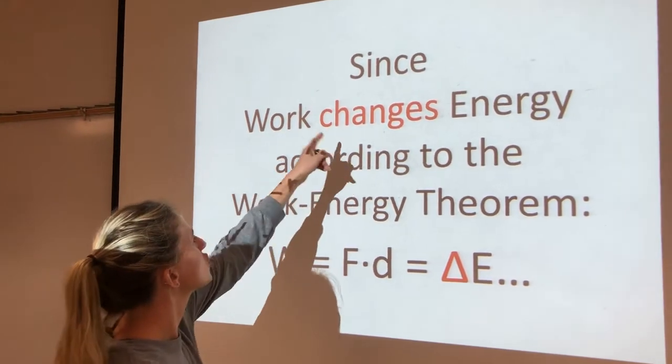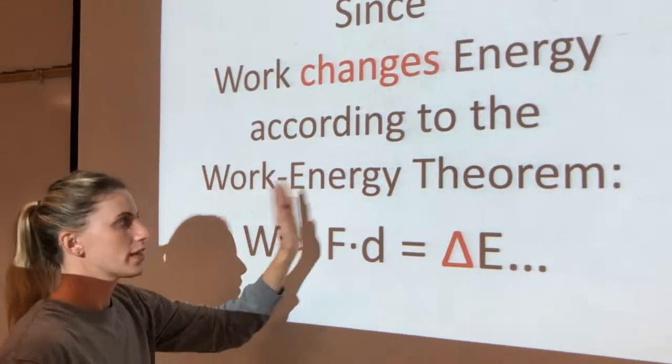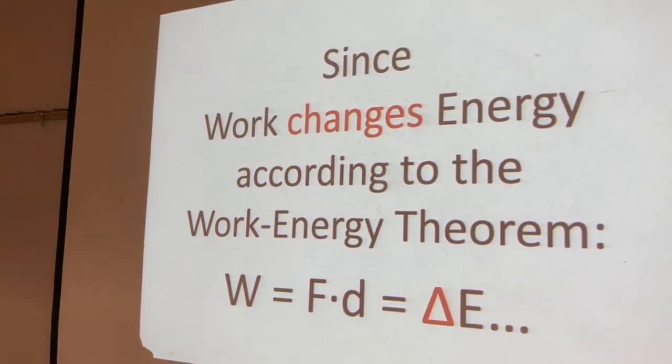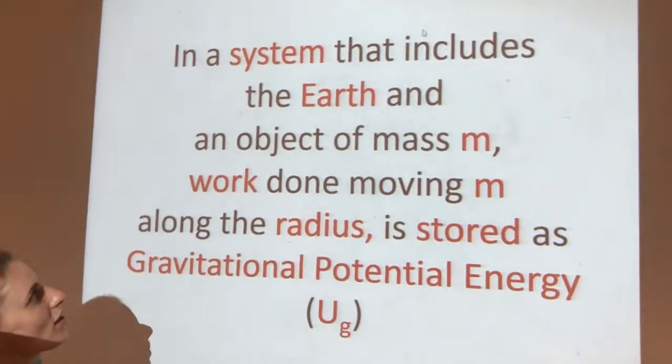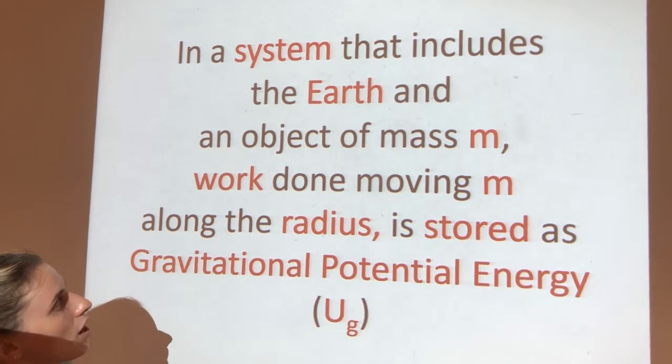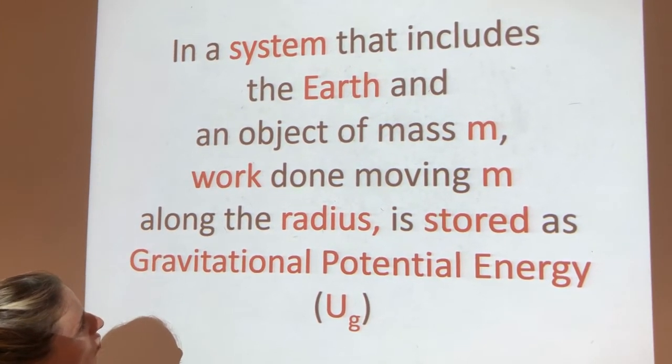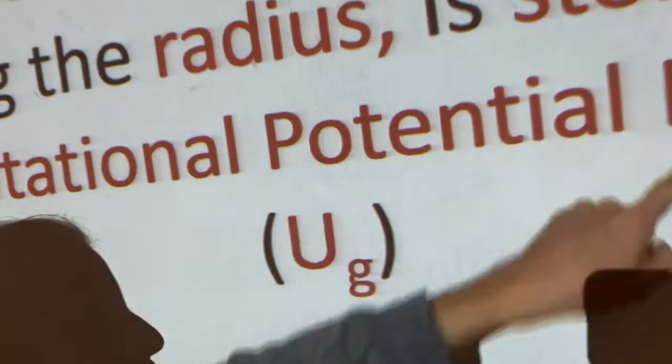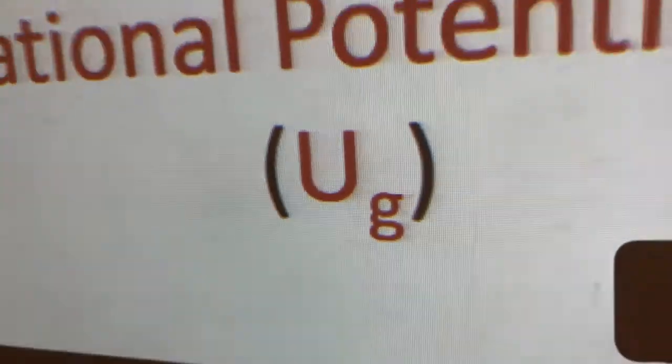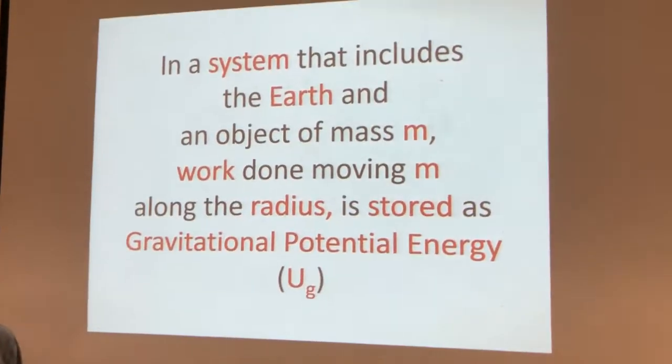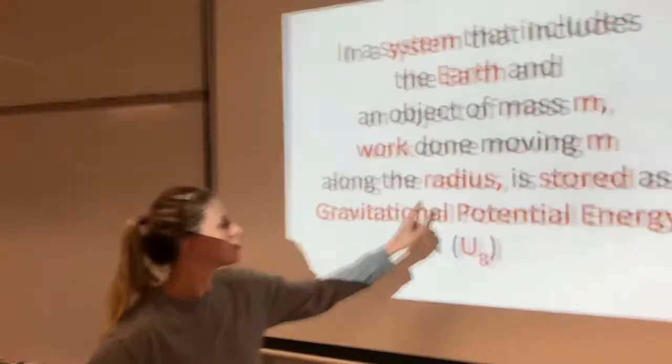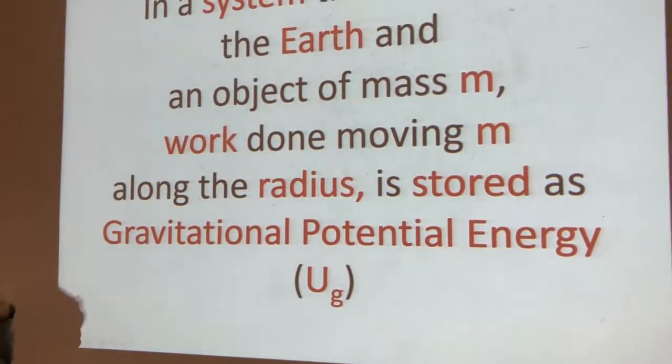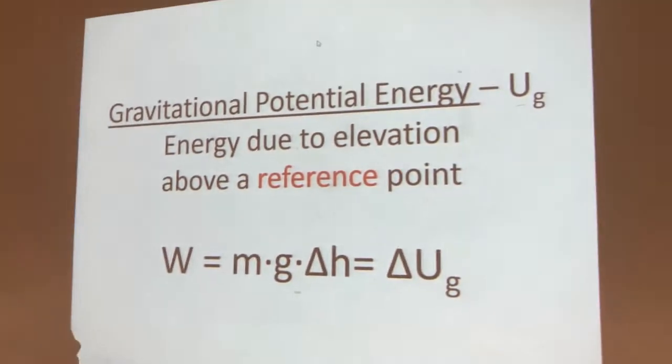Since work changes energy, according to the work-energy theorem, and a system that includes the Earth and an object of mass m, work done moving m along the radius is stored as gravitational potential energy, Ug. Now, didn't we say in the beginning what happened to the work done? That's right. It gets stored as Ug. Gravitational potential energy.